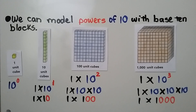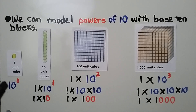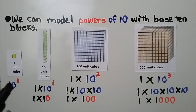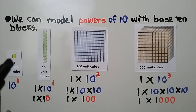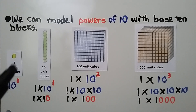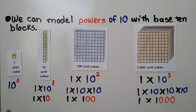We can model powers of 10 with base 10 blocks. Here we have one little cube — that would be 10 to the zero power, because we don't even have a 10. There's no 10 here, just a 1, so that's 10 to the zero power.